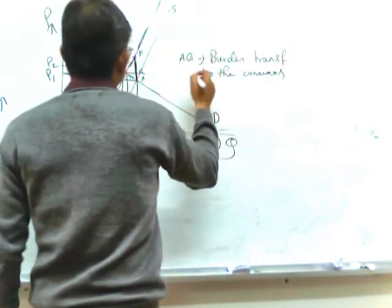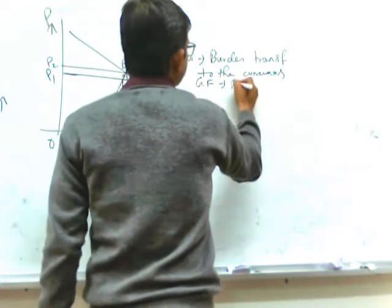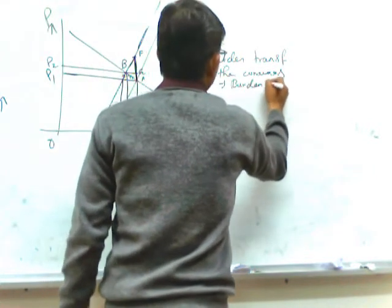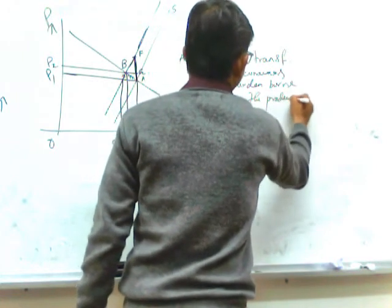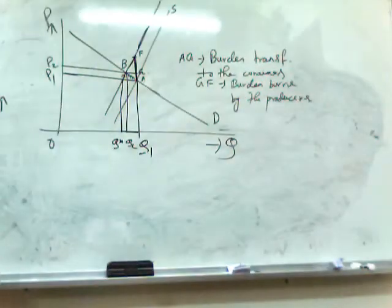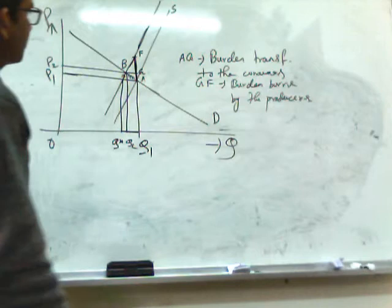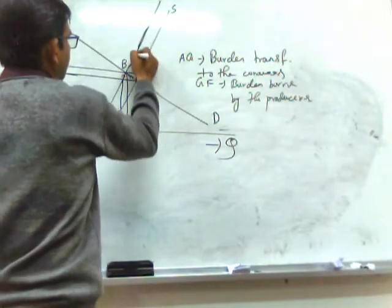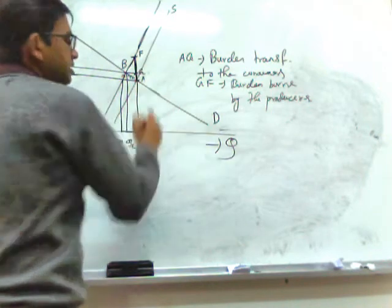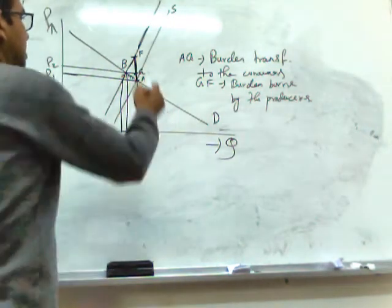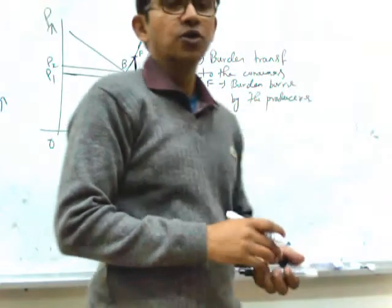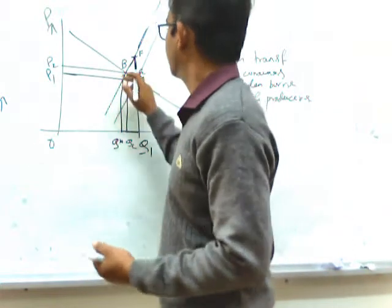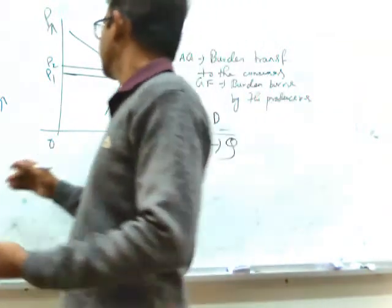GF is the burden borne by the producers. So AF is the total burden, out of which AG can be transferred towards the consumers, and the maximum burden is borne by the producers. Price elasticity of supply is very low, so supply responds less to price, resulting in a small rise in price. Demand responds quicker than supply here.